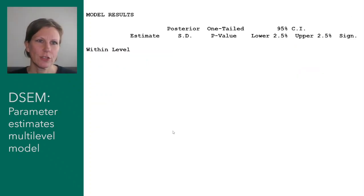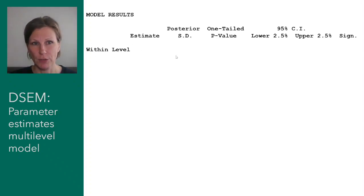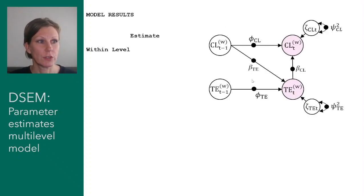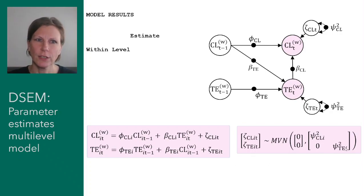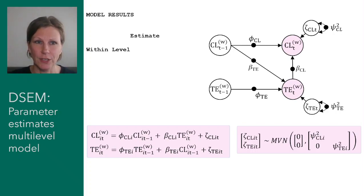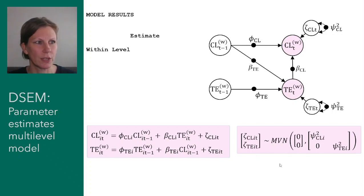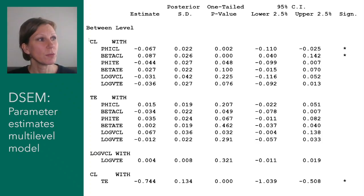When we look at the parameter estimates, there are no parameters estimated at the within-person level because everything was made random — all arrows have a filled circle. In the regression equation for this model at the within level, all parameters now have a subscript i, including the slopes and the residual variances, indicating these are individual-specific parameters. What we estimate are their variances, means, and covariances at the between-person level.